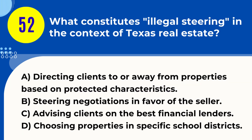Question 52. What constitutes illegal steering in the context of Texas real estate? A. Directing clients to or away from properties based on protected characteristics. B. Steering negotiations in favor of the seller. C. Advising clients on the best financial lenders. D. Choosing properties in specific school districts. Answer: A. Directing clients to or away from properties based on protected characteristics. Explanation: Illegal steering in Texas real estate involves directing clients towards or away from certain neighborhoods or properties based on race, religion, or other protected characteristics, which violates fair housing laws.